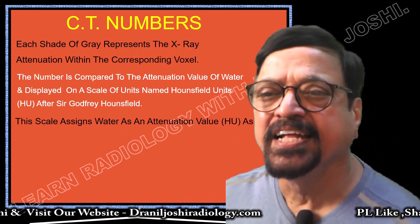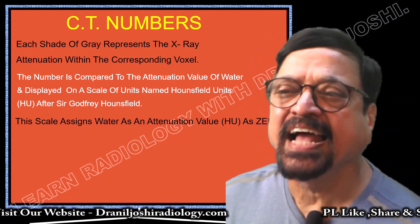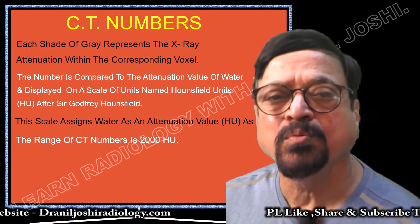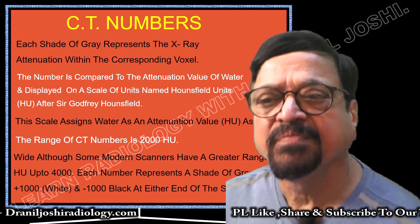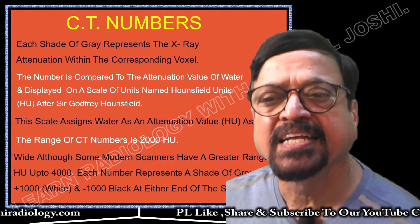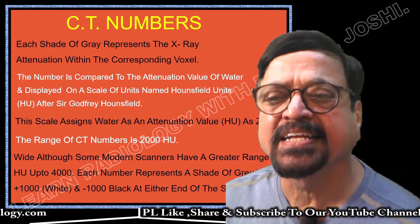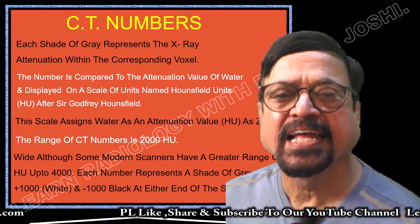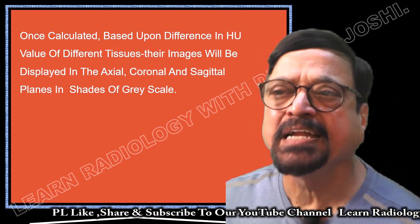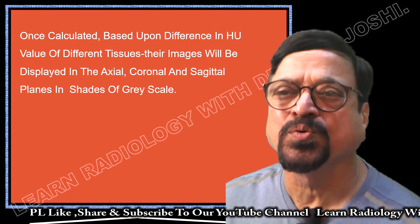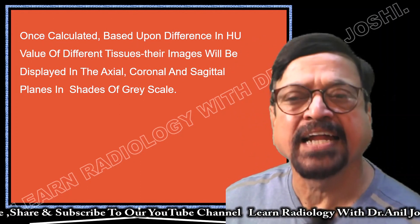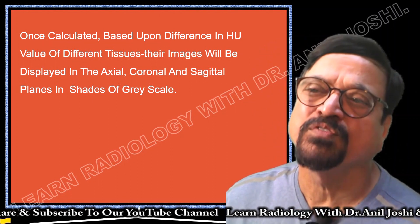The number is compared to the attenuation value of water and displayed on a scale named the Hounsfield Unit (HU), after Sir Godfrey Hounsfield. This scale assigns water an attenuation value of zero. The range of CT numbers is up to plus 2000; nowadays some scanners can go up to 4000, but the practically important CT values are plus 2000 and minus 1000 (for air). Beyond that, we practically don't need them. Images are displayed in axial, coronal, and sagittal planes in shades of grayscale.